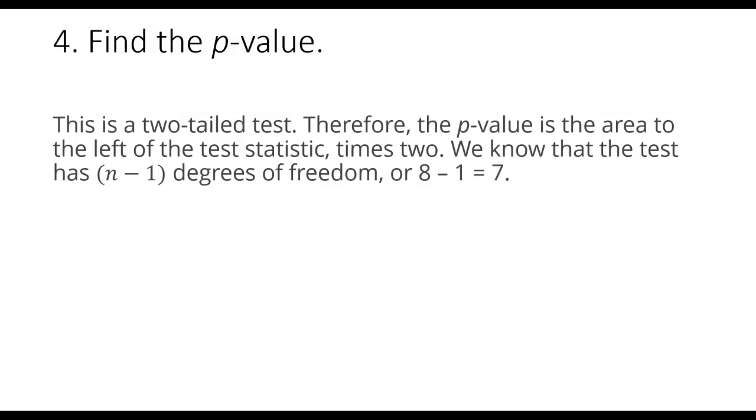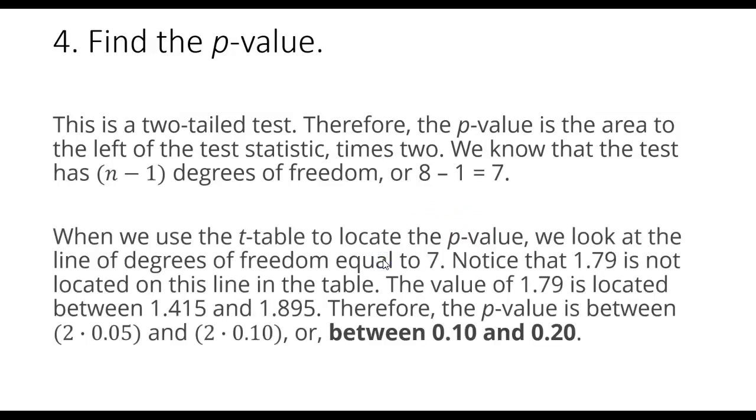And we know that is found by taking n minus one. Our sample size is eight, so eight minus one is seven—our degrees of freedom are seven. So we go into our t-table in order to locate the p-value, the line degree of freedom of seven. And you're going to notice that our test statistic of 1.79 is not located on this line. This table is pretty bare bones when it comes to the values that are there.